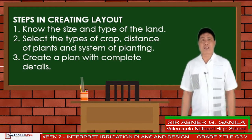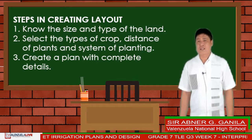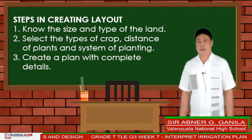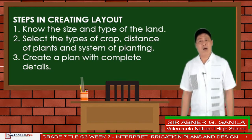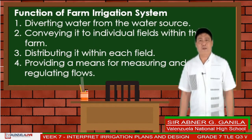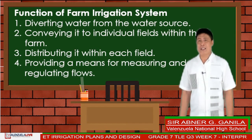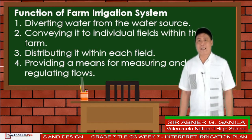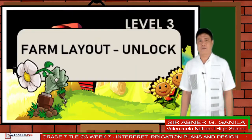What are the different steps in creating a layout? First, know the size and type of the land. Second, select the type of crop, distance of plants, and system of planting. Third, create a plan with complete details. The primary functions of a farm irrigation system are: diverting water from the water source, conveying it to individual fields within the farm, distributing it within each field, and providing a means of measuring and regulating flows.